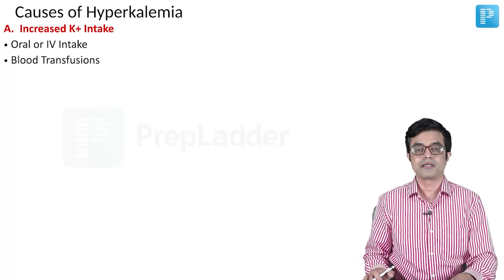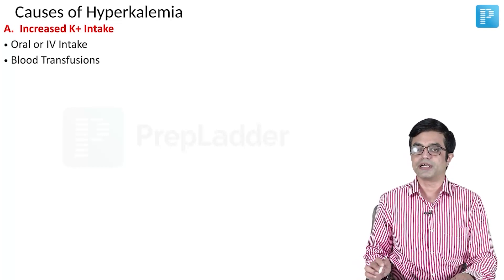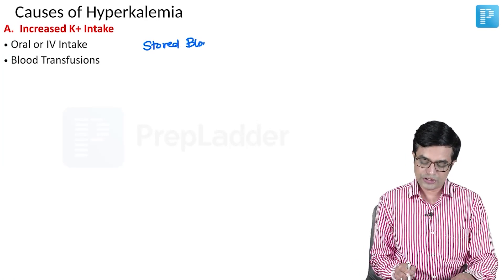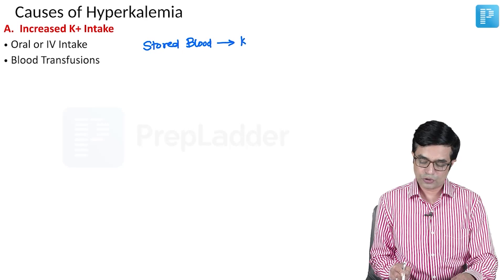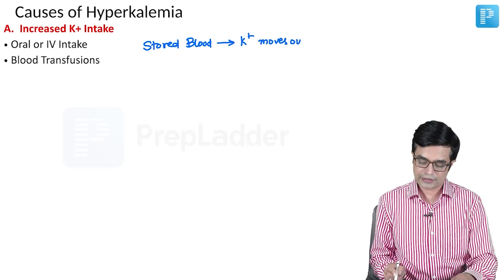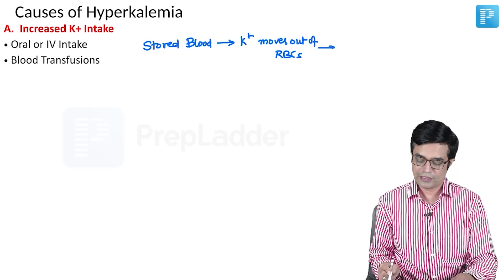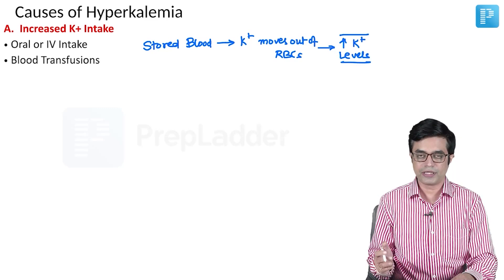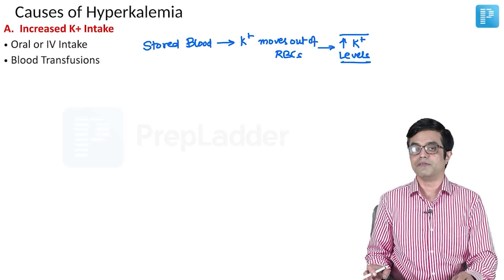In case of repeated blood transfusions, hyperkalemia can develop because whenever there is storage of blood, potassium is an intracellular ion. Potassium moves out of RBCs and this produces an increase in the serum potassium levels in the stored blood. When this high potassium containing blood is given, it raises the serum potassium level as well.